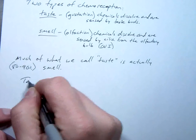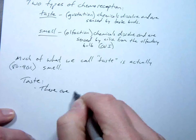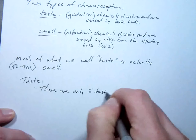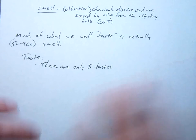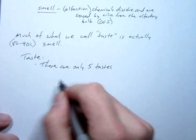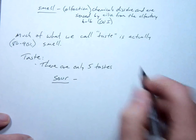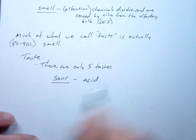Or mint, or apple, or any other type of flavor is really actually a smell. They're all smells. There's only five tastes. So taste: there are only five tastes. If it doesn't fit within the category of one of these five, it's not a taste, it's a smell. Sour.